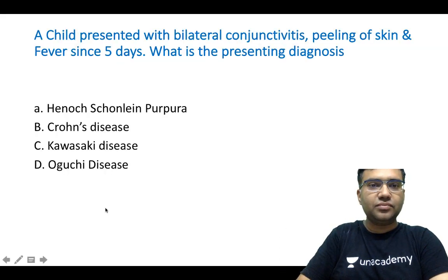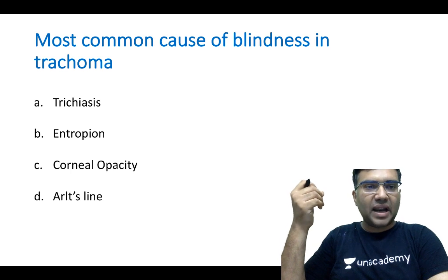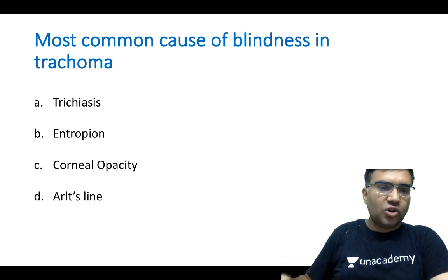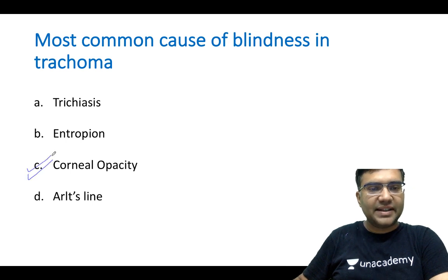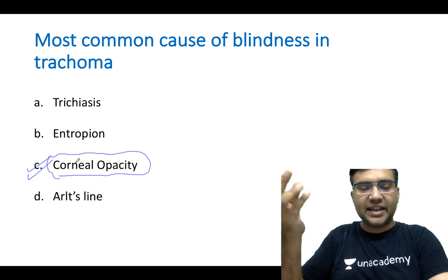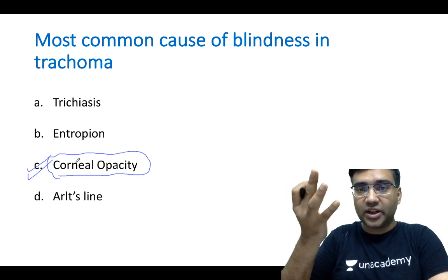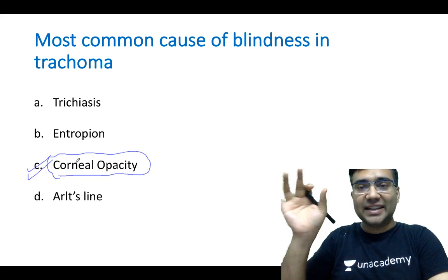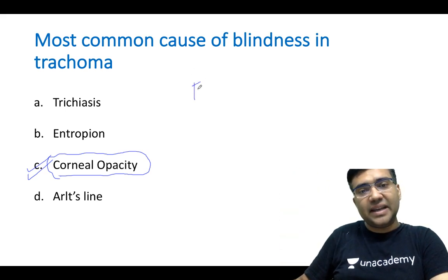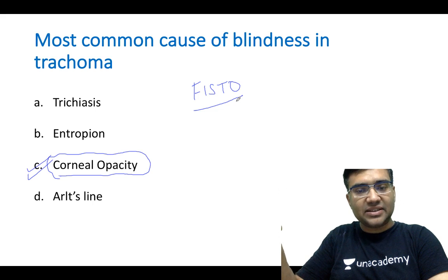The next question: most common cause of blindness in trachoma. The options were trichiasis, entropion, corneal opacity, and arslam. Remember, whenever they ask about the most common cause of blindness in trachoma, it is always corneal opacity. Corneal opacity can be a manifestation of trichiasis and entropion, but entropion is a lid disorder and won't cause decreased vision directly. A corneal scar or corneal opacity causes decreased vision. You may recall from my lectures the FISTO classification, which replaced the MacCallan classification.